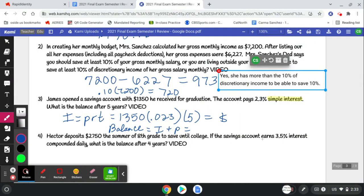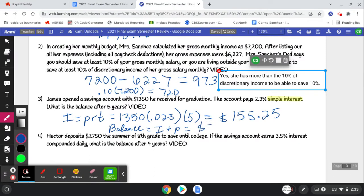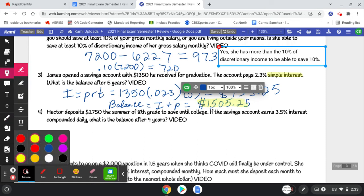So $1350 times 0.023 times 5 is $155.25 in interest plus the $1350 will give me my balance. $1505.25, and that's my balance.